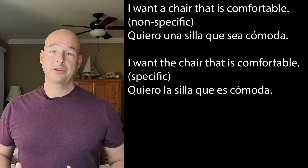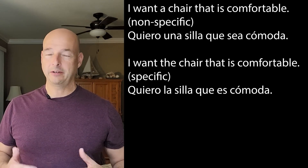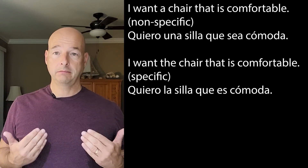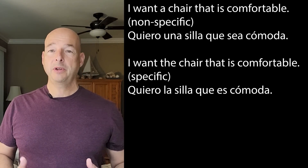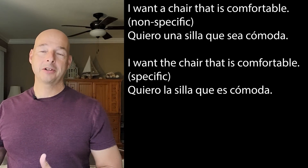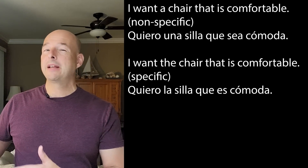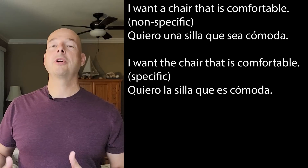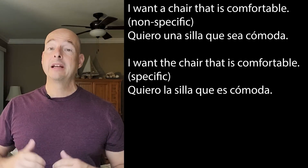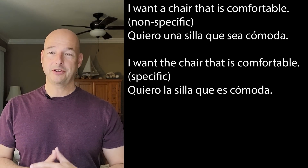If you've been following the series on subjunctive triggers, you may have noticed a familiar pattern here. We do have our subject change. In the first sentence, I want — I am the subject. And then we have the word que, something to watch. In the second clause, we have a different subject. In this case, is comfortable — what is comfortable? The chair. So the chair is the subject of the second clause. If that second clause is describing a non-specific item, I know the subjunctive needs to go there.